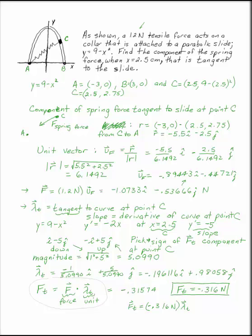The key concept to remember is that for any force F and any line — such as the tangent to the curve — the component of F along that line is given by the dot product of F and the unit vector along that line.